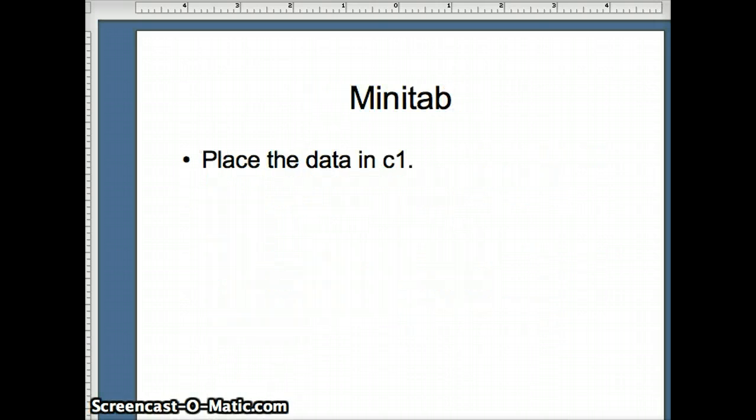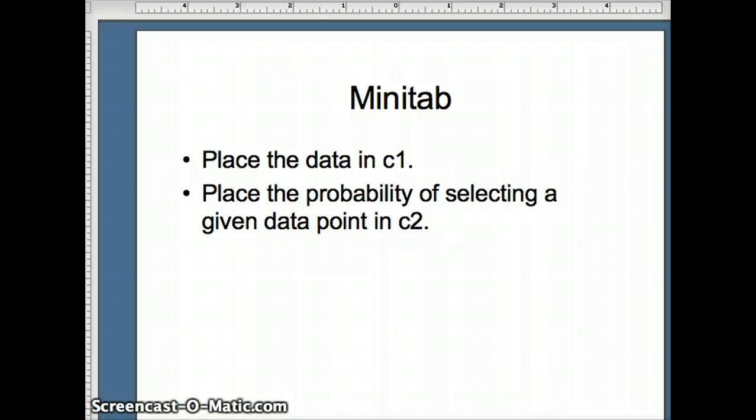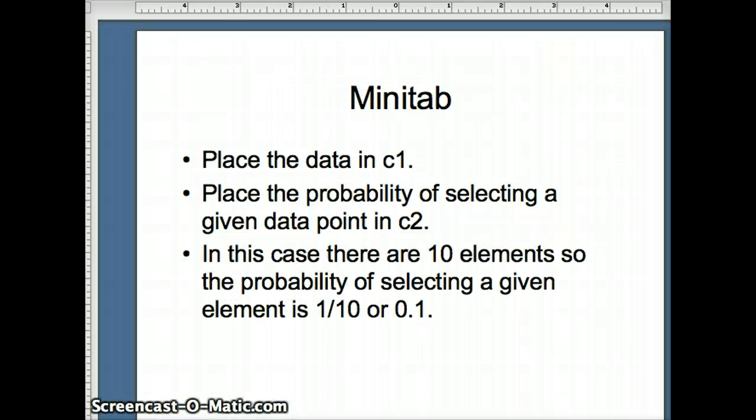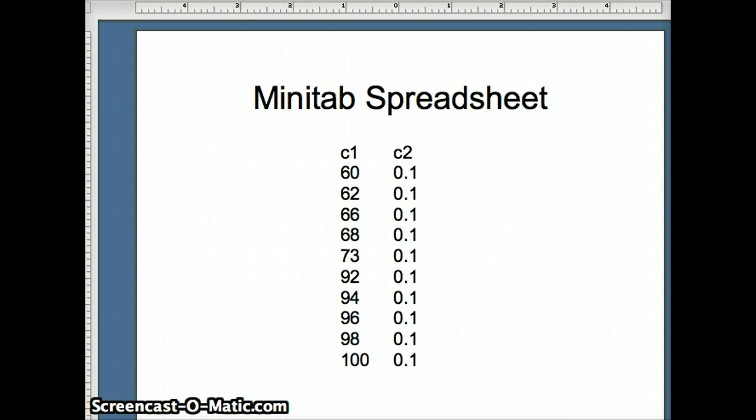So I'm going to place the data in C1. I have to put the probability of selecting a given data point in C2. So C1 is going to have 10 numbers. C2, the probability of selecting the first number with replacement, is 1/10. So 10 elements, every element has the same probability of being selected, 1/10 or 0.1. So here is what our spreadsheet is going to look like. In Minitab, we put in C1 and C2.